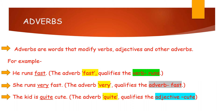He runs fast. I am sure you must have heard this sentence. Which is the adverb? The adverb is fast. Why? Because it is talking about how he runs — it qualifies the verb 'run'. Run is the verb and therefore fast is the adverb. How does he run? He runs fast. Or you may say he runs slowly.